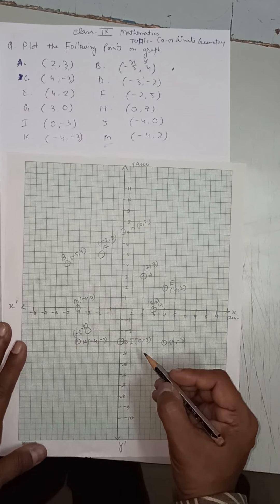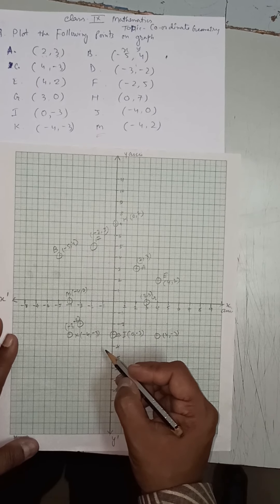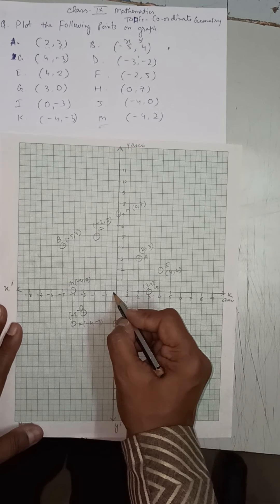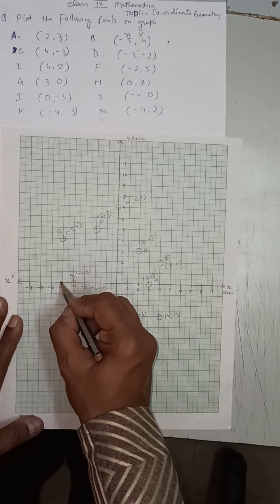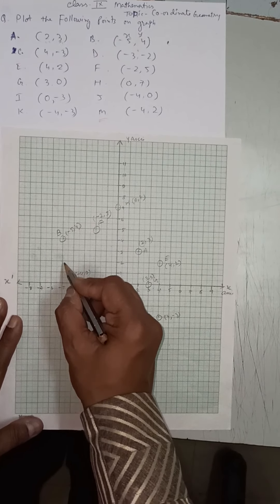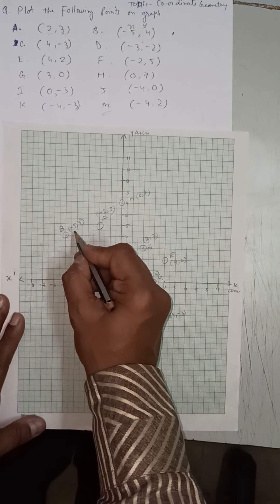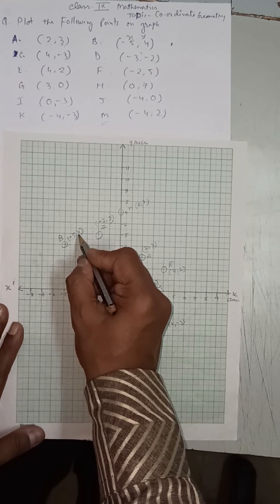Now point B: (−5, 4). Minus 5 means the x value is negative, so we go minus 1, minus 2, minus 3, minus 4, minus 5. Then y is positive 4, so we go upward 1, 2, 3, 4. At the intersecting point we make a dot, draw a circle around it, and write B(−5, 4).